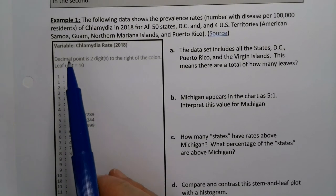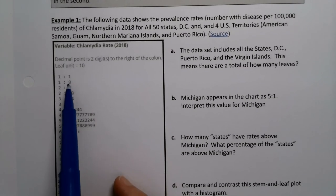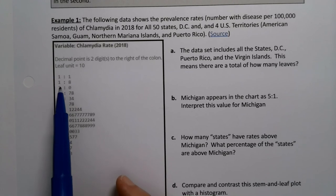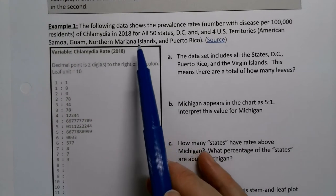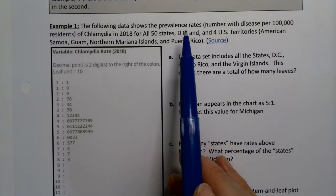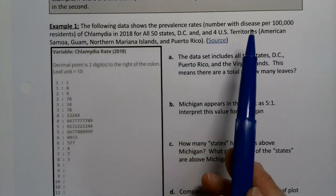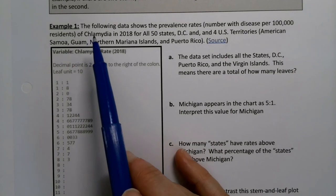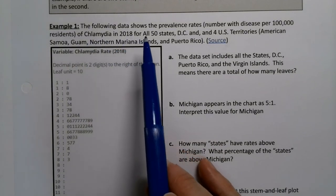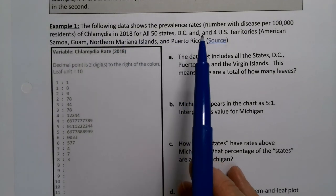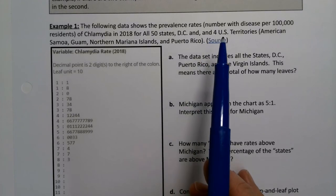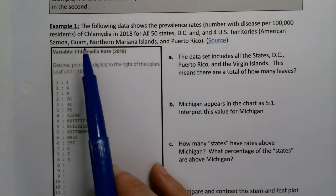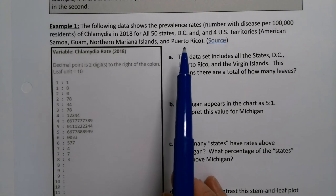They're often rounded, and these in fact were rounded, these particular numbers. These represent in this example the prevalence rate, which is the number with the disease per 100,000 residents of chlamydia in 2018 for all 50 states, Washington DC, and the four US territories, which are American Samoa, Guam, Northern Mariana Islands, and Puerto Rico.